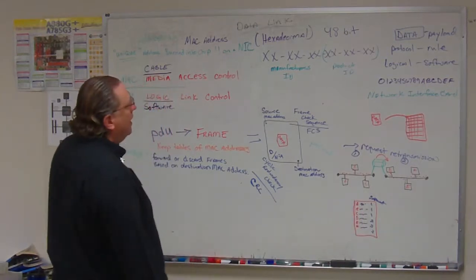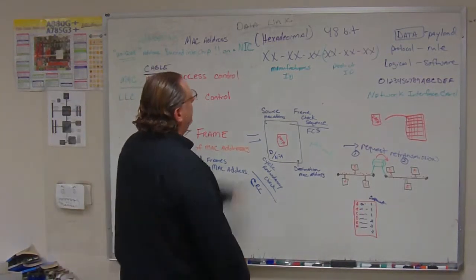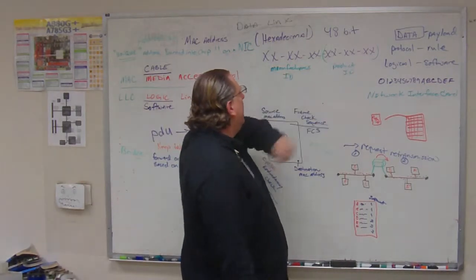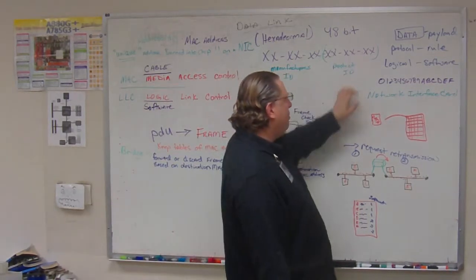Or some other connection. The most popular is the PCI slot. And this hexadecimal number, the MAC address, is divided into two parts: the manufacturer's ID and the product ID.